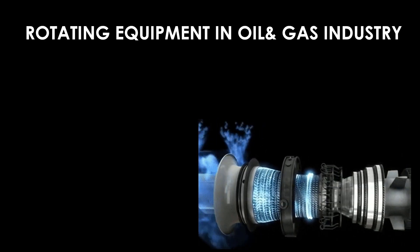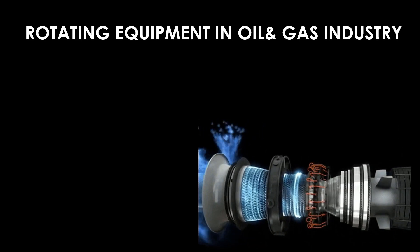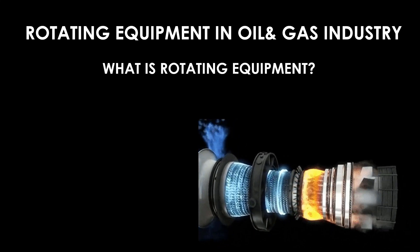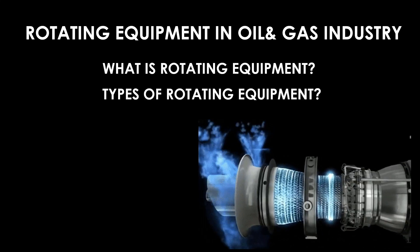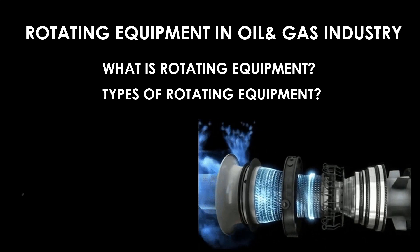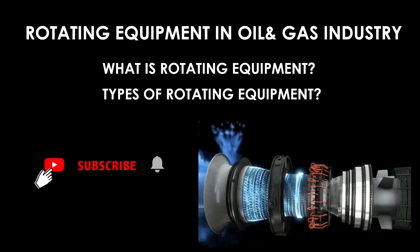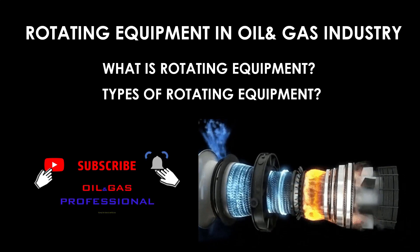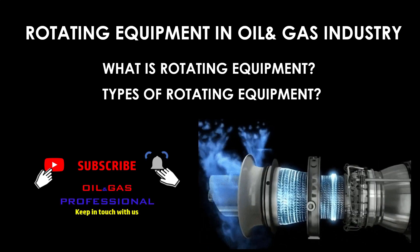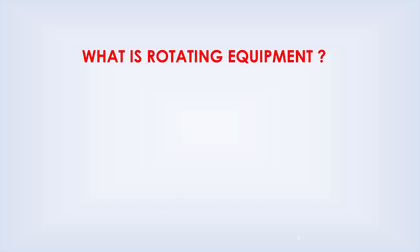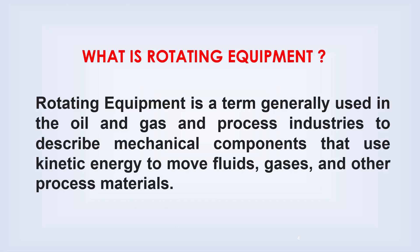Rotating equipment in the oil and gas industry. Rotating equipment is a term generally used in the oil and gas and process industries to describe mechanical components that use kinetic energy to move fluids, gases, and other process materials.